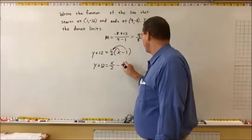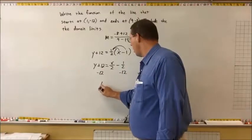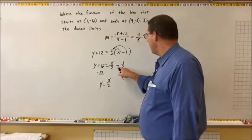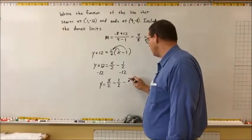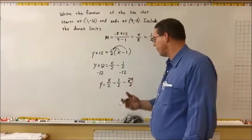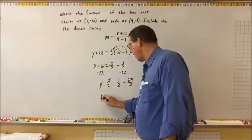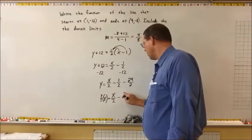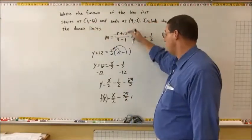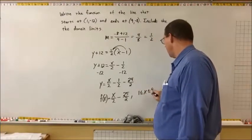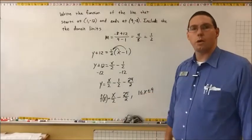One half times negative 1 is negative one half. Subtracting 12 from both sides — converting 12 to 24 over 2 — we get y equals x over 2 minus 1 over 2 minus 24 over 2, which gives y equals x over 2 minus 25 over 2. So the function is f(x) equals x over 2 minus 25 over 2. The domain starts at 1 and ends at 9, so 1 less than or equal to x less than or equal to 9, meaning x is on the interval from 1 to 9 inclusive.